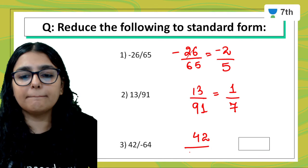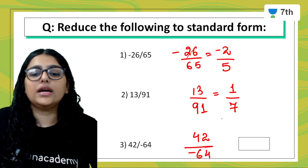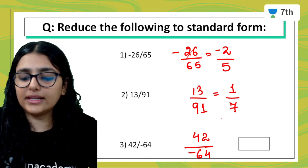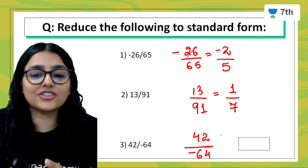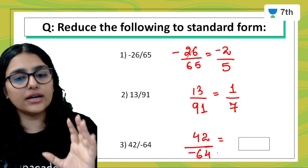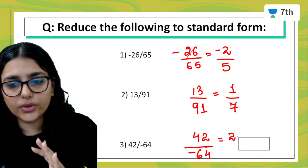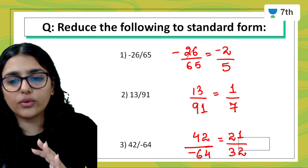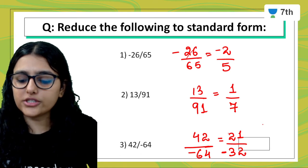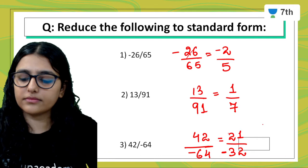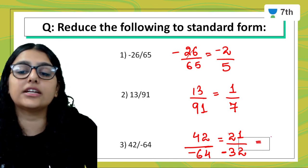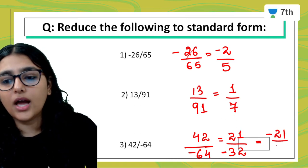The next number is 42 upon minus 64. We bring it slowly to the lowest form using common factors. Both are even numbers, so both go by 2: 2 times 21 is 42, and 2 times 32 is 64. We also have to put the negative sign at the right place, which is in the numerator. So the answer is minus 21 upon 32. Always bring the negative sign to the numerator.